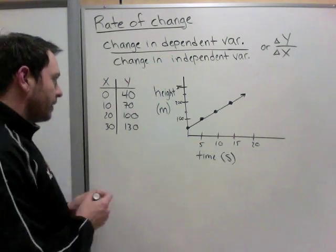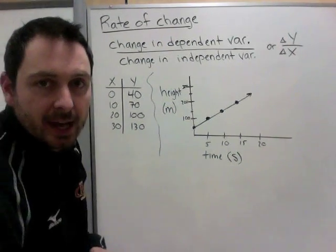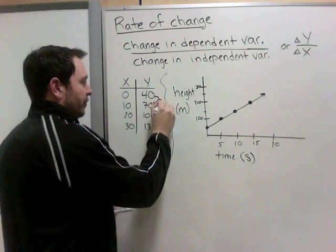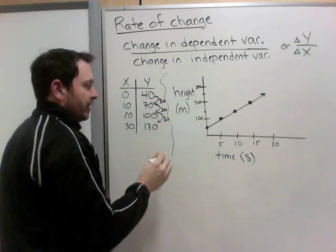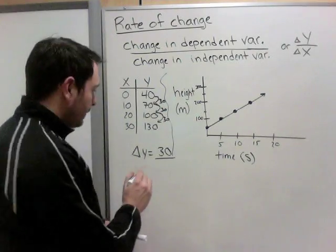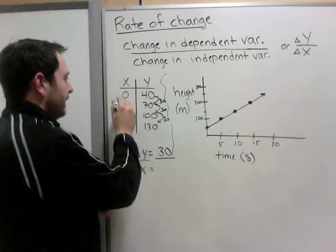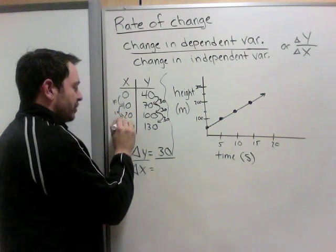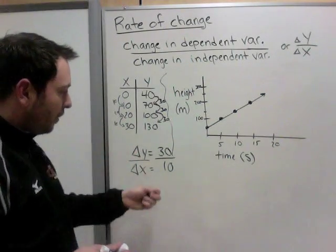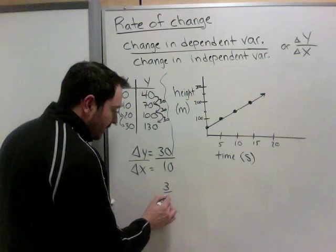Let's calculate rate of change from a table of values. How fast is it changing? We need the change in Y divided by the change in X. Y changed by 30, and 30, and 30 each time, so the change in Y is 30. The change in X is going up 10 each time. So the rate of change is 30 over 10 — maybe it's 30 kilometers every 10 hours. Reducing the fraction gives us 3 over 1 as our rate of change.